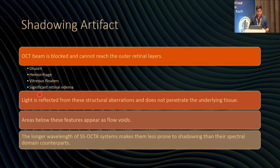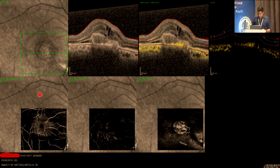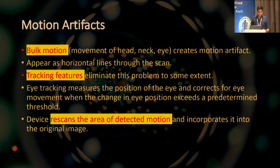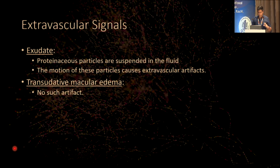Shadowing artifact occurs when the OCT beam is blocked and cannot reach the outer retinal layer — caused by drusen, hemorrhage, vitreous floaters, or significant retinal edema. Light is reflected back from these structures and does not penetrate the underlying tissue — the area below appears as a flow void area. For example, a scar can cause shadowing artifact; significant retinal edema means the lower section shows nothing useful. Motion artifacts also exist. Extravascular signals occur where exudate and transudate macular edema cause particles suspended in fluid — the motion of these particles causes extravascular artifacts.